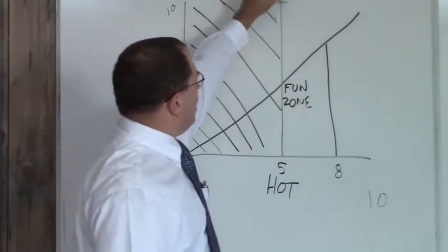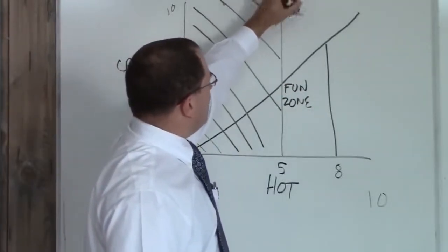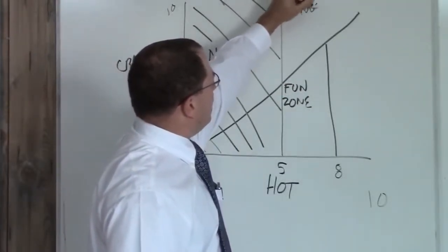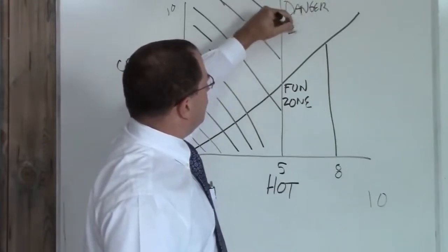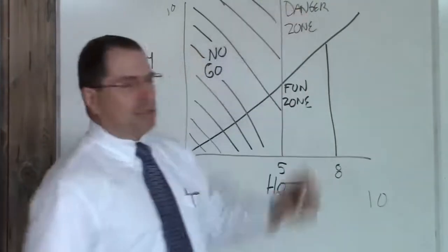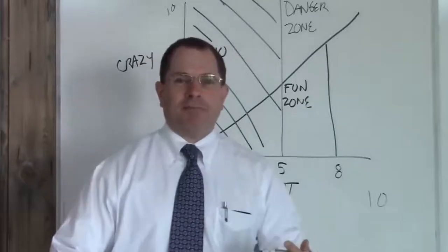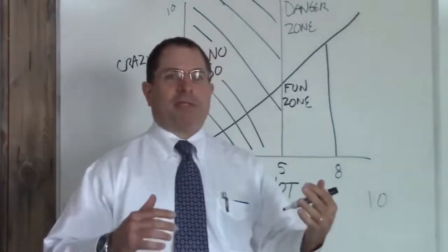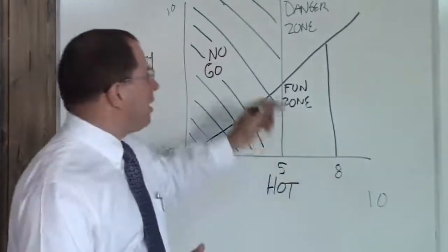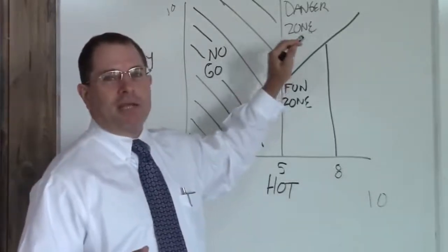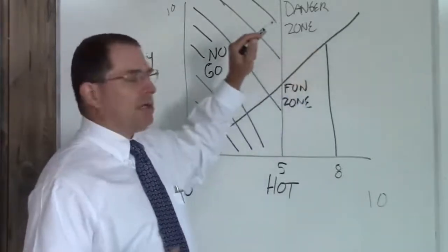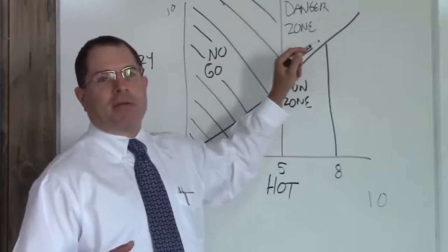Above the crazy line we have the danger zone. This is your redheads, your strippers, anyone named Tiffany. This is hairdressers. This is where your car gets keyed, you get a bunny in the pot, your tires get slashed and you wind up in jail.